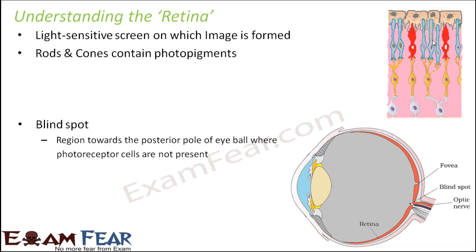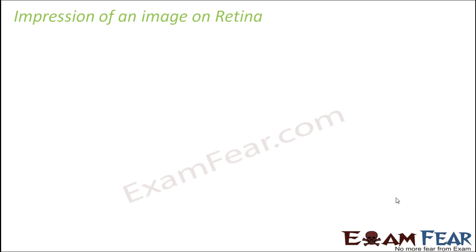An important feature of the retina is the blind spot — one single spot on the retina where image formation does not take place. This is because there are no photoreceptor cells at that particular spot. Since no one is there to receive light, no image is formed, and we cannot see anything at that point. This is quite surprising, since we are unaware that such a point exists in our eye.